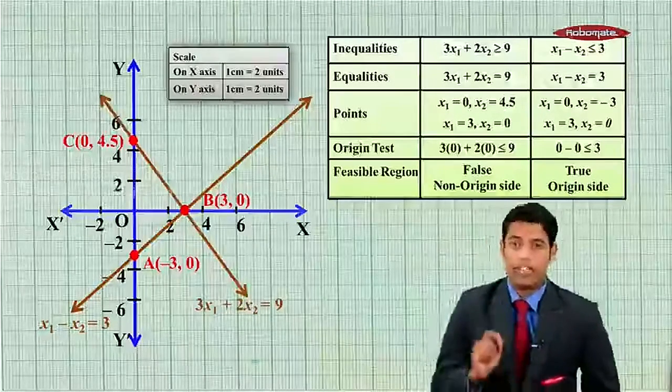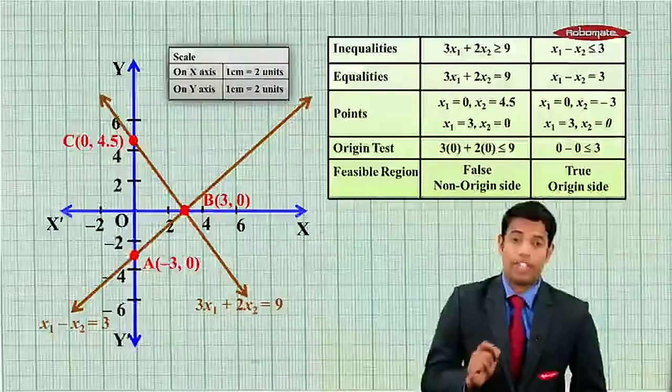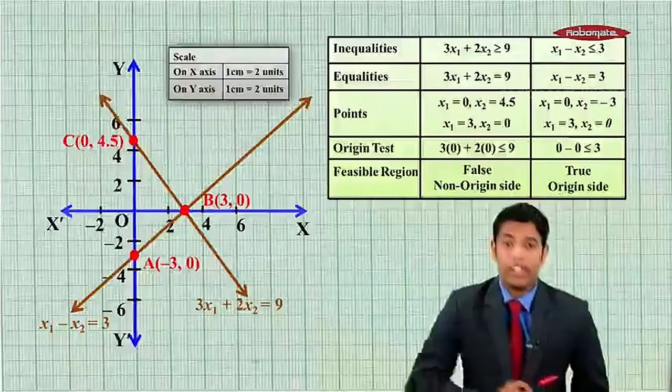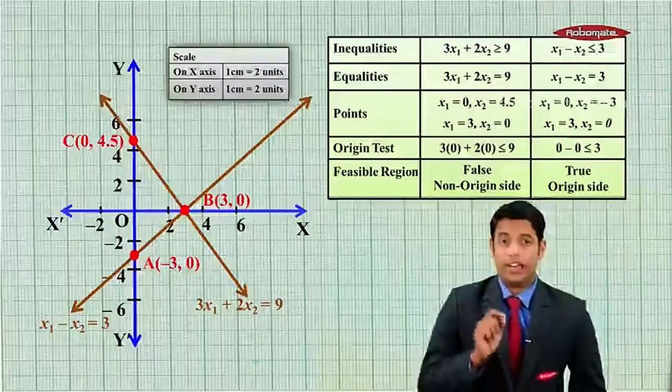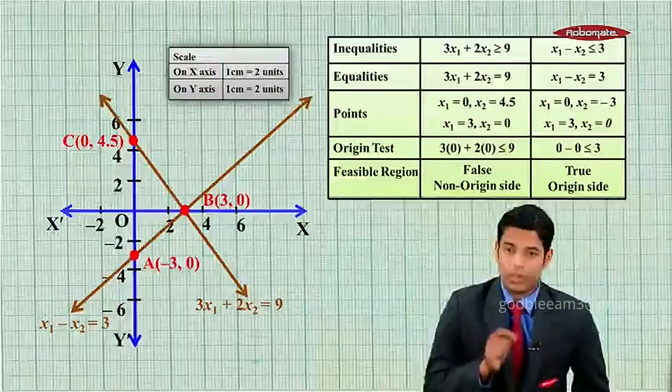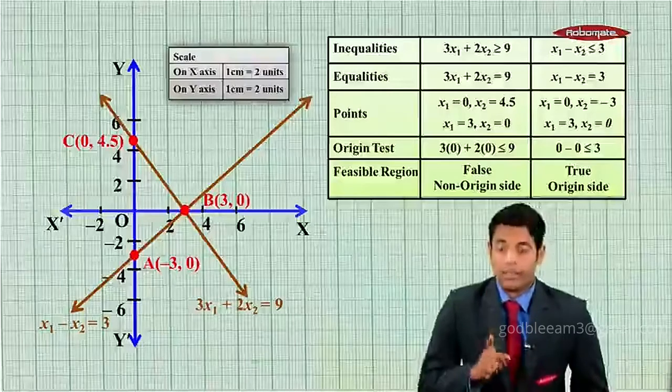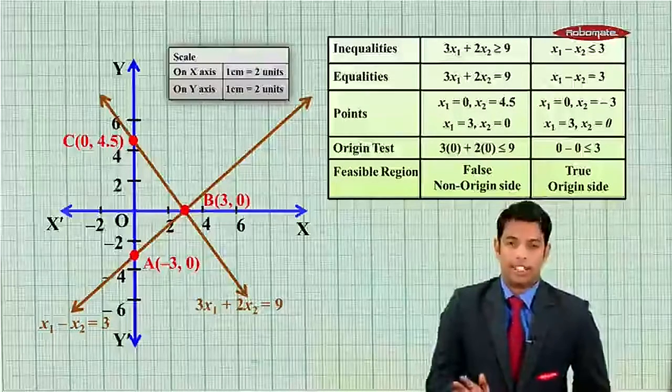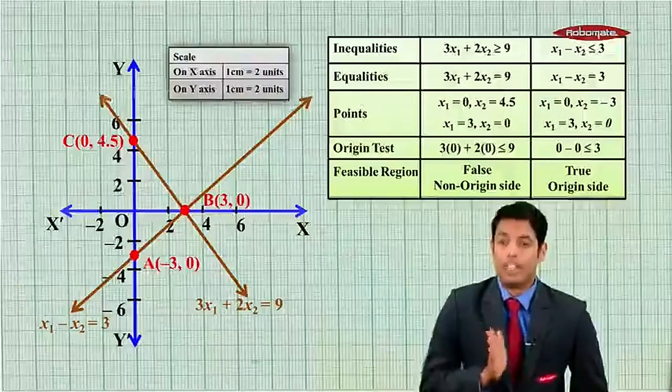We have drawn the lines. Now we will shade our feasible region. Now as given, or we have calculated, that for 3x1 plus 2x2 equal to 9, the feasible region is on non-origin side, so feasible region won't contain origin for this line.